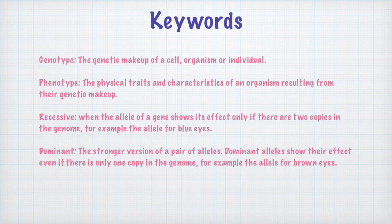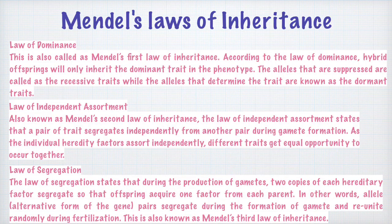Now let us go to Mendel's laws. Mendel has given three laws of inheritance based on his hybridization experiments on pea plants. These three laws of inheritance are: the law of dominance, the law of segregation, and the law of independent assortment.